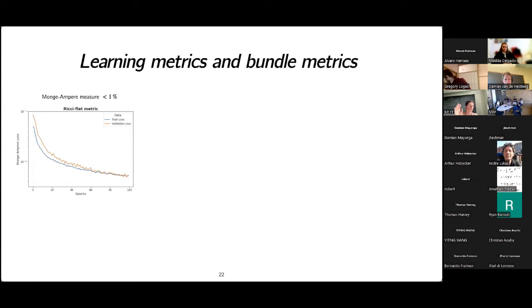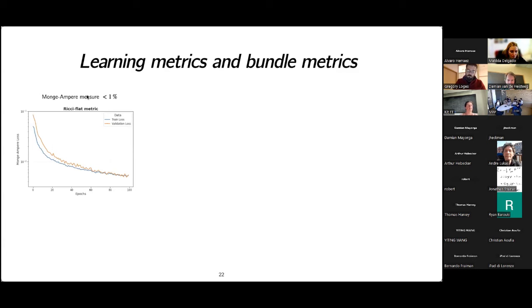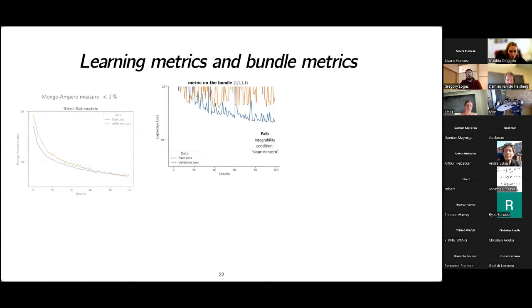Here are the results. Showing representative training curves over 100 epochs on a log scale, the loss comes down for both training and validation sets, indicating we are learning a function over the manifold in general. The integrated measure — how well we satisfy the equation — is less than one percent, telling us we've done quite well in finding the right solution to this PDE.